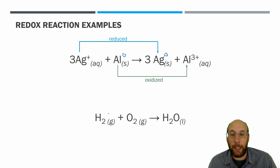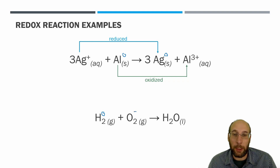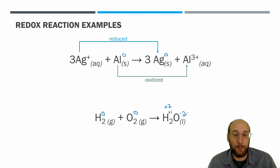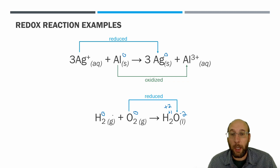In another example with covalently bonded compounds, H₂ and O₂ each have an oxidation state of zero. In water, oxygen has a −2 oxidation state and each hydrogen has +1, giving a total of zero. O₂ goes from zero to −2, so it gained electrons and became reduced. Hydrogen went from zero to +1, so it lost an electron and became oxidized.